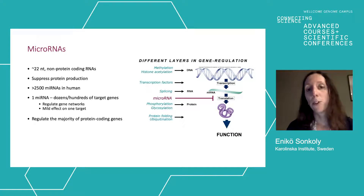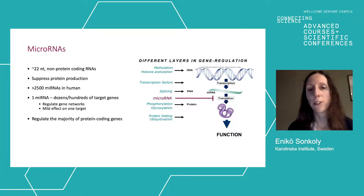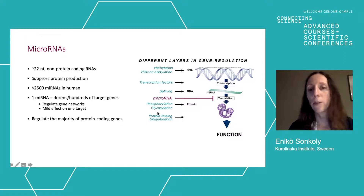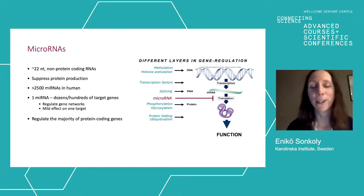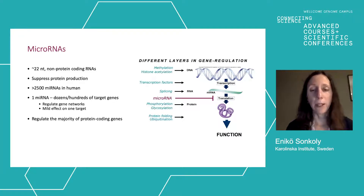As I mentioned when showing epigenetics, one step is methylation of the DNA, histone acetylation. Then we have regulation at the transcriptional level by transcription factors, RNA splicing by which you can get different proteins from the same RNA, and at the protein level: phosphorylation, glycosylation, protein folding, and ubiquitination. So there are many steps to control gene expression. MicroRNAs add another level — regulation at the post-transcriptional level, between the messenger RNA and the protein.